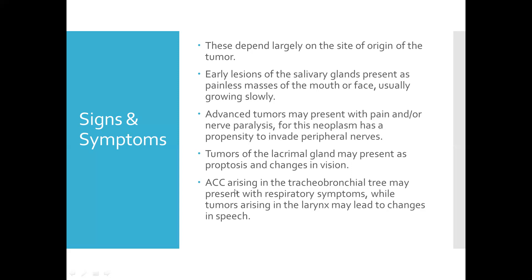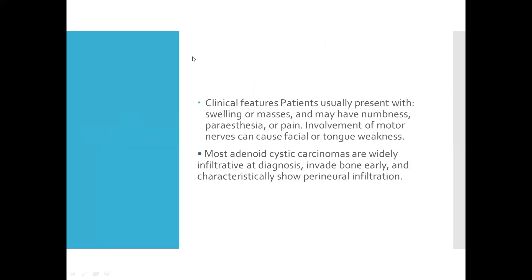Tumors of the lacrimal gland may present as proptosis and changes in vision. ACC arising in the tracheobronchial tree may present with respiratory symptoms, while tumors in the larynx may lead to changes in speech. Clinical features include swelling or masses, numbness, paresthesia, or pain. Involvement of motor nerves can cause facial or tongue weakness. Most adenoid cystic carcinomas are widely infiltrated at diagnosis — they invade bone early and characteristically show perineural infiltration.